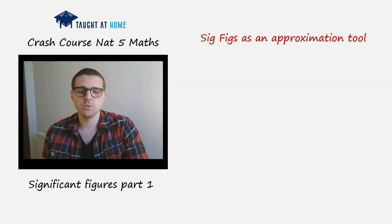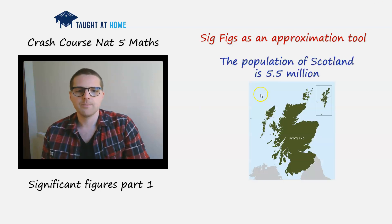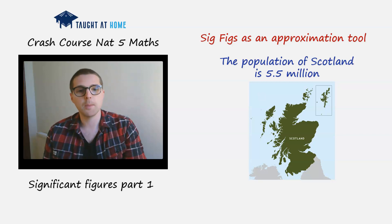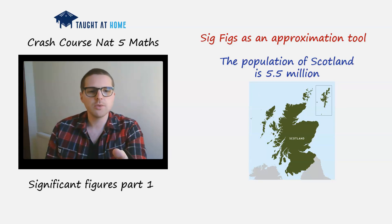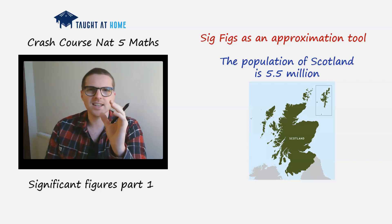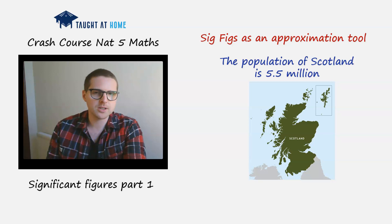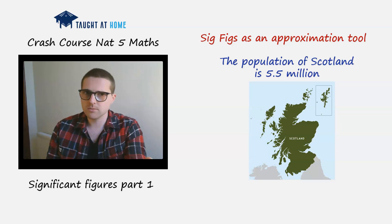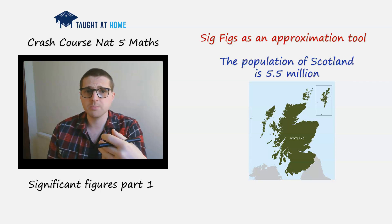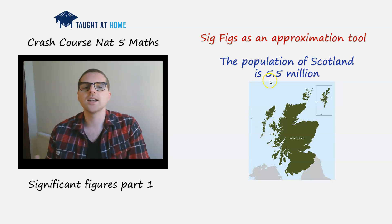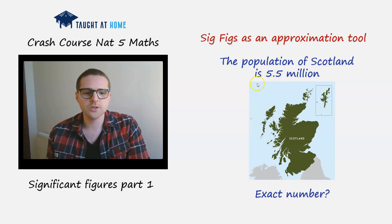Let's take an example. The population of Scotland is 5.5 million. Now, do you think that's the exact number? Do you think there are exactly 5.5 million people in Scotland? Pretty unlikely. So we're going to assume that this number has been approximated. How many significant figures has it been approximated to?